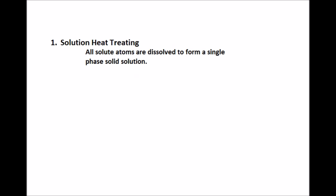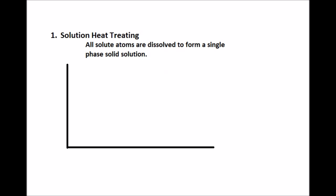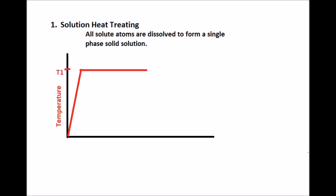The first, solution heat treating: all solute atoms are dissolved to form a single-phase solid solution. It is heated up to a predetermined temperature depending upon the metal alloy until all the solute atoms are dissolved into a single phase. Since there is only one solid phase, Greek letter alpha is used in a phase diagram.